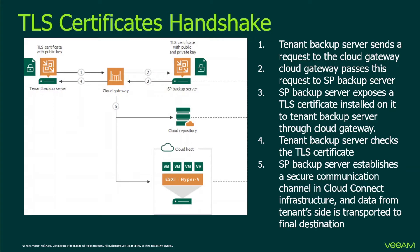This includes the Cloud Gateway and the Cloud Repository for backup operations, or the Cloud Host for replication operations. In this way, the entire tunnel is totally protected from the tenant to the gateway to the final destination — the repository or host. The tenant uses the public key of the TLS certificate to cipher the entire connection, and the Cloud Gateway uses the private key of the backup server to decrypt the data inside the tunnel. The first step to configure this is to set up the Cloud Gateway role in CloudConnect and install the certificate.